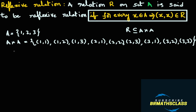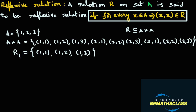Now you take any subset of A cross A. I will take some elements of A cross A. Let R1 equal {(1,1), (1,2), (1,3)}. Is R1 a subset of A cross A? Clearly, all the elements present in R1 are present in A cross A, so R1 is a subset of A cross A. Therefore, R1 is a relation on A.